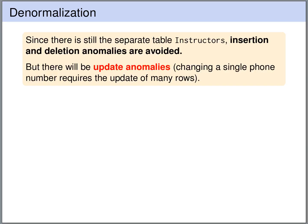Since we still have the separate instructors table with the names and the phone number of the instructors, we avoid the insertion and deletion anomalies. We can still insert the phone number of instructors even if the instructor does not give a course. And even if the last course of an instructor is deleted, the phone number is still in the instructors table.